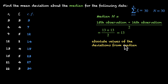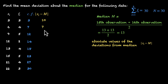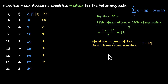Next, we find the absolute values of the deviations from the median — that's |xi − m|. We take each entry, subtract the median, and take the absolute value. So: |3−13| = 10, |6−13| = 7, |9−13| = 4, |12−13| = 1, |13−13| = 0, |15−13| = 2, |21−13| = 8, and |22−13| = 9.